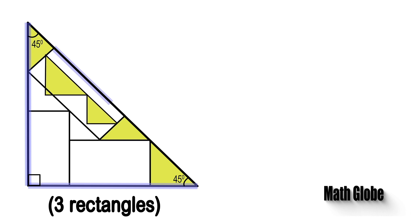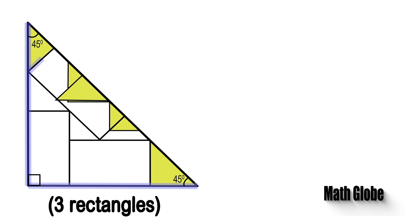Let's slide the yellow triangles without turning or distorting them accordingly. As seen, one side of each yellow triangle is lying on the hypotenuse of the large triangle.